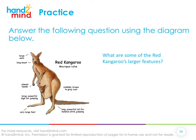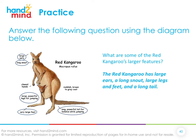What are some of the red kangaroo's larger features? I'm looking for anything that says large, long, or big. I can see it has large ears, a long snout, large powerful legs, large feet, and a long powerful tail. So in one sentence: the red kangaroo has large ears, a long snout, large legs and feet, and a long tail.